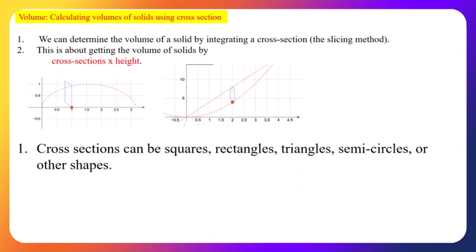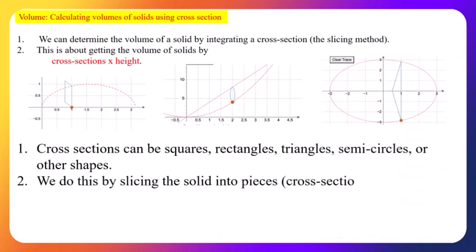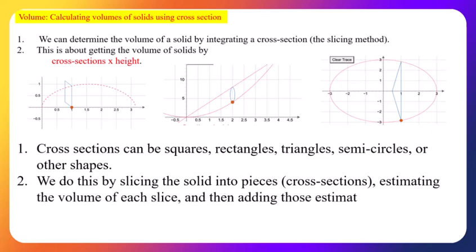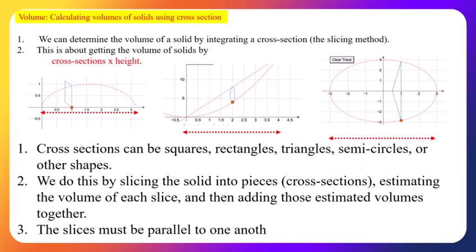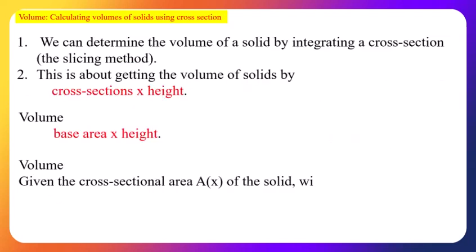We slice the solid into pieces called cross-sections, estimate the volume of each slice, and then add these estimated volumes together to get the total volume of the solid. The cross-sections can be collected along the x-axis or y-axis. Importantly, all slices must be parallel to one another.